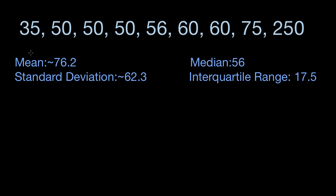They all agree to put their salaries into a computer. These are their salaries measured in thousands: one makes $35,000, three make $50,000, one makes $56,000, two make $60,000, one makes $75,000, and one makes $250,000, so she's doing very well for herself.